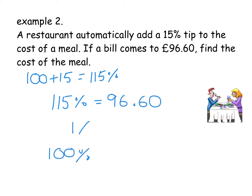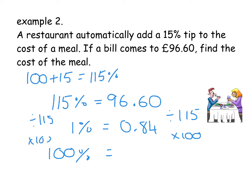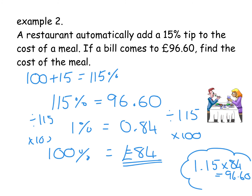We need to get to 100%, so again the step in between is to find 1%. We're going from 115 to 1, so we're dividing by 115. We do the money divided by 115: £96.60 divided by 115 gives you 0.84. If you know 1%, to get to 100% you're just timesing that number by 100. 0.84 times 100 is £84. A quick check: 1.15 times £84 gives you £96.60, which it does. So I know I've got the right value.